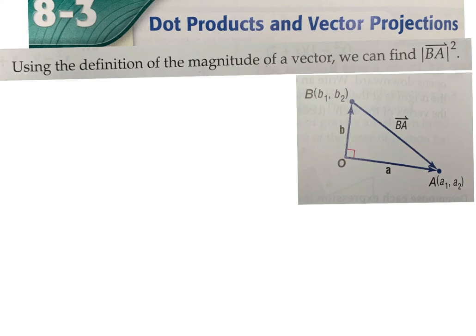We're going to talk about the dot product, where it comes from, and we're going to use it for vector projections. This is something we're actually going to be able to use for non-right angles — that's really what this is leading up to. All the stuff we've done so far uses right angles, and now we're going to be able to solve triangles using this process for non-right angles. It's not as complicated as the law of cosines.